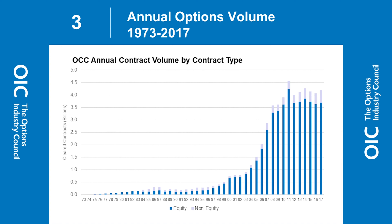This is one of my favorite slides – the picture of our industry over the last 40-plus years. We started in 1973 in Chicago with 16 companies. We traded 928 contracts the first day in April 1973, calls only. Puts weren't approved by the SEC until 1977. We now trade over 4,400 different products – individual companies, indexes, and ETFs – with about 950,000 different series. So there are lots of choices out there.